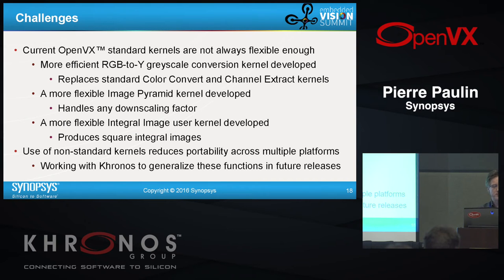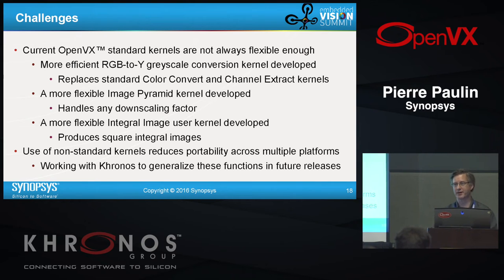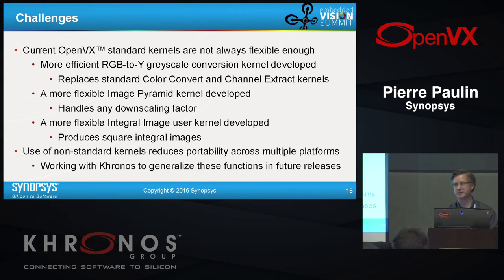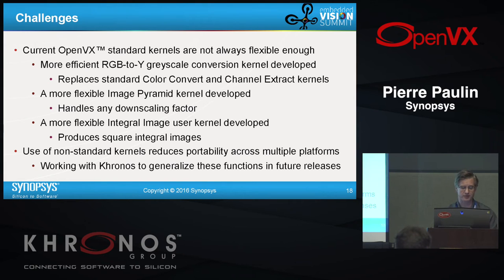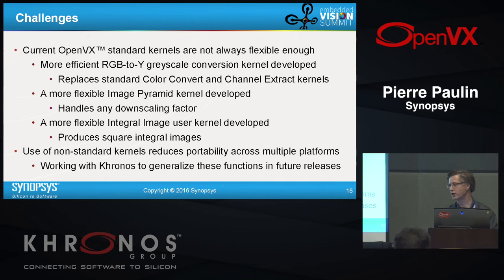We made a few improvements along the way. Initially we could have used color convert and channel extract, but we did a graph fusion and called a new RGB-to-Y color conversion — a basic optimization. The image pyramid kernel was made more general to handle any downscaling factor, not just the current factor-of-two limitation. We also did a variant of the integral image that does sum of squares rather than just sum. Minor extensions, but non-standard kernels reduce portability, so we all need to bring our experiences and enlarge this library together.